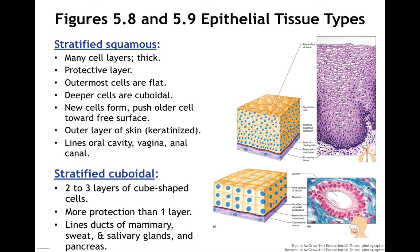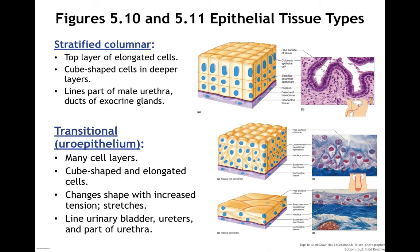Stratified cuboidal consists of two to three layers of cube-shaped cells, providing more protection than one layer does. We're going to find these in the ducts of the mammary glands, the sweat glands, salivary glands, and the pancreas. Stratified columnar has only the top layer really looking columnar — below that, they're kind of cuboidal shaped. They're found rarely, but they are found in parts of the male urethra and the ducts of some exocrine glands.